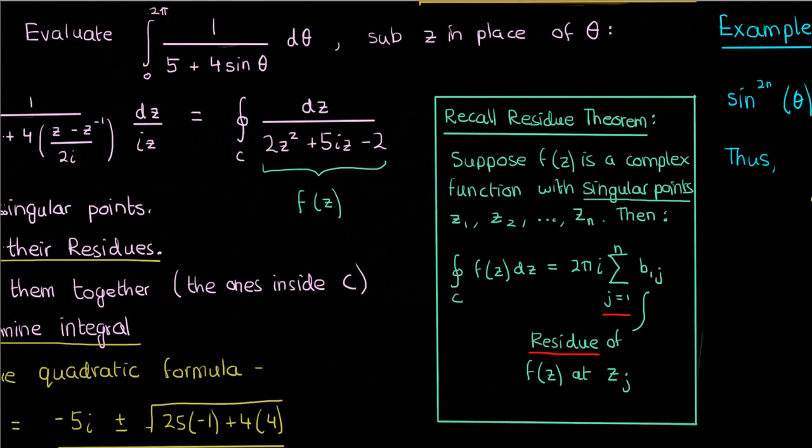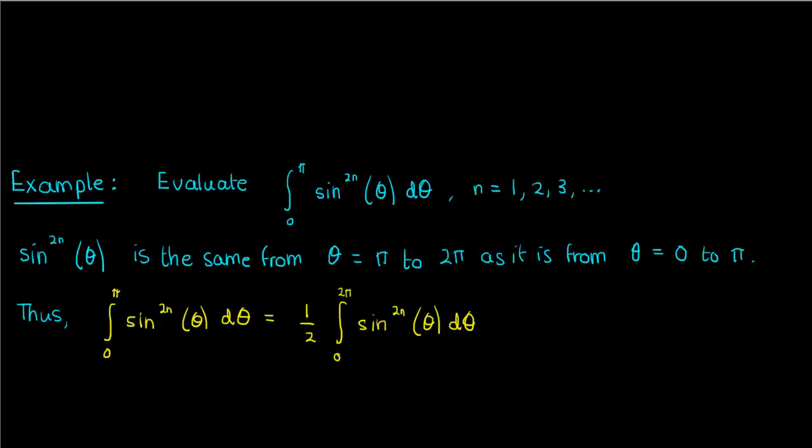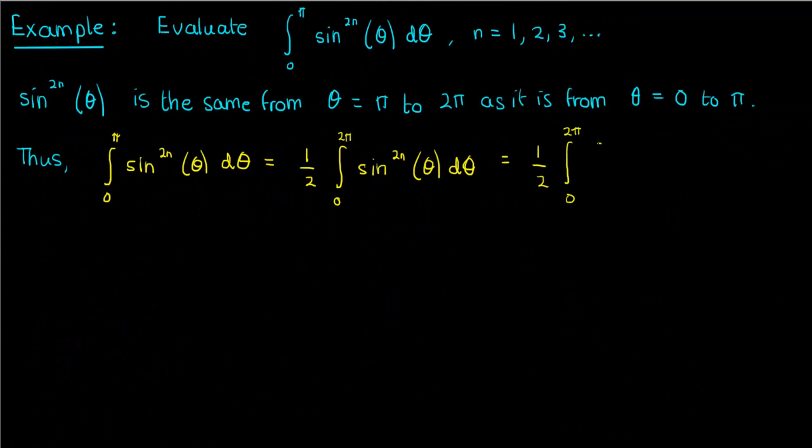So now that the integral is in the proper form, meaning from 0 to 2π, we can use the substitutions to convert theta to z and express our integral purely in terms of z. When we convert everything to z, this is what we'll end up with. Note that C is again just the unit circle centered at the origin.